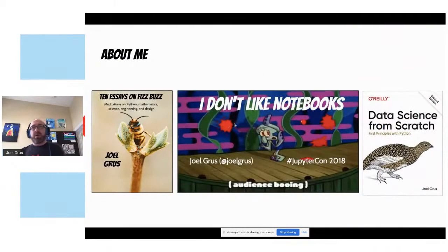So apart from my introduction about where I've worked, I wrote this book called 10 Essays on FizzBuzz, which just came out, which is what I'm talking about tonight. You may also know me as the person who does not like notebooks and gave a talk about it at JupyterCon. And I also wrote a book called Data Science from Scratch, which is an O'Reilly book, and it's pretty good. So these are some of my various claims to fame or infamy.